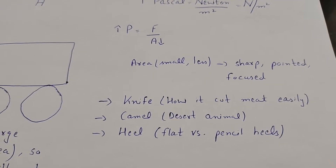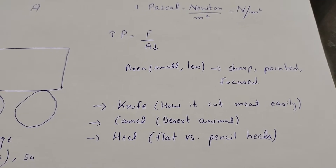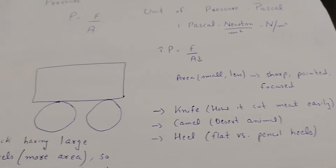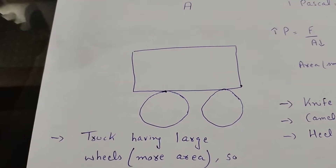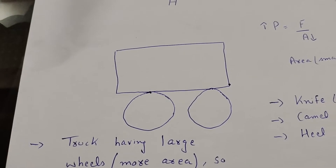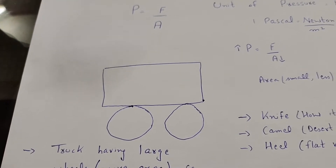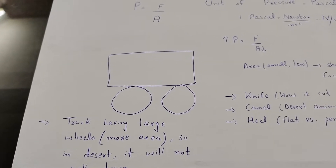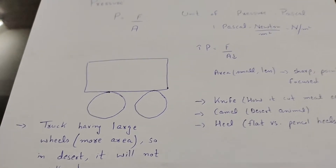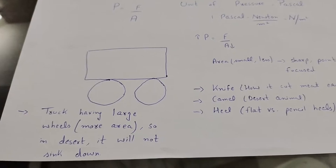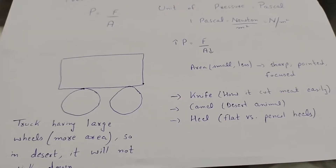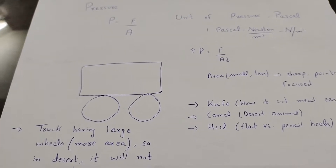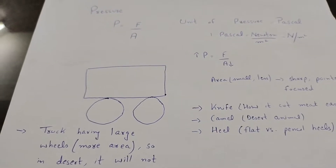We will take the example of a camel, the flat heel and the pencil heel. If you observe, trucks have large tires — they have large area so the pressure is less. The weight of the truck is distributed over a large area, creating less pressure. Similarly, big jeeps in the desert have big wheels with large area, so less pressure, and they do not sink in the sand.